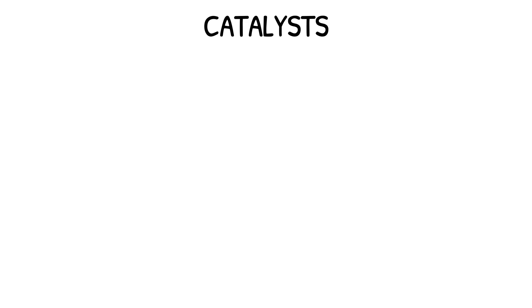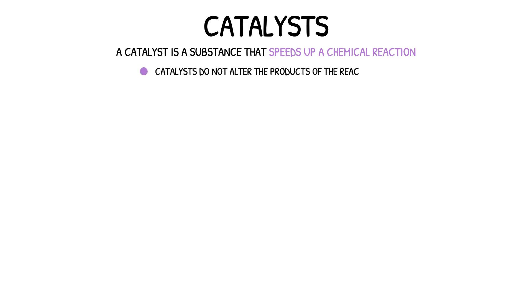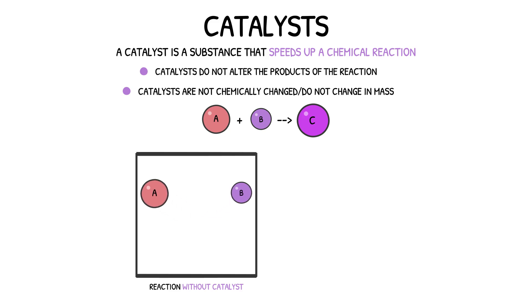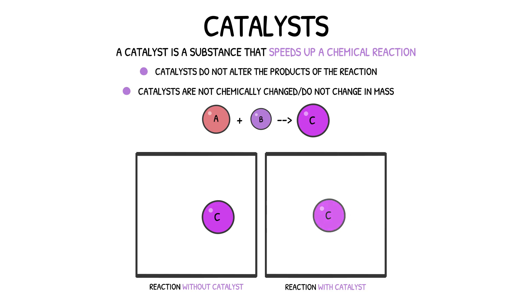Catalysts are the backbone to many industrial processes that are necessary in turning raw materials into useful products. By definition, a catalyst is a substance that speeds up the rate of a chemical reaction. However, when doing so, the catalyst does not change the products of the reaction and is not chemically changed or used up. For example, let's say we have a reaction whereby reactants A and B react to form product C. When the reaction takes place in the absence of a catalyst the rate of reaction is very slow, however when the same reaction takes place with the use of a catalyst the rate of reaction is much faster. Despite this, you'll notice that the products of both reactions are the same.